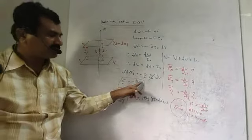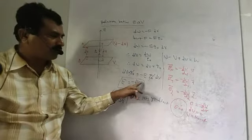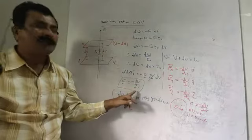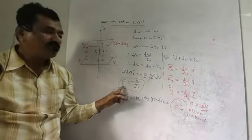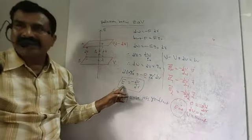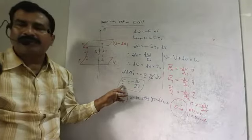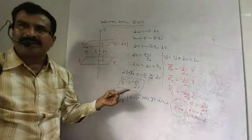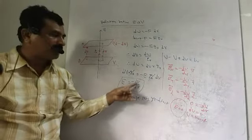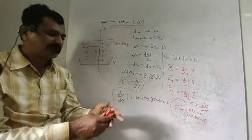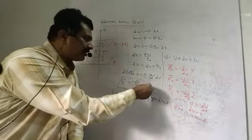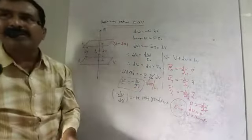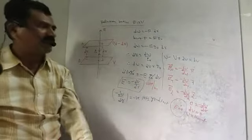The unit of potential gradient is volt per meter, where the potential unit is volt and the distance unit is meter, which is also the unit for electric field. The electric field has the unit of Newton per Coulomb, and volt per meter is an equivalent unit for electric field.